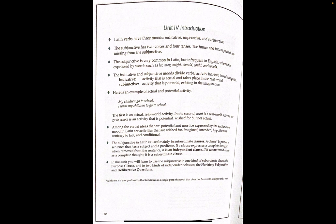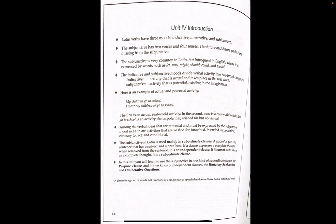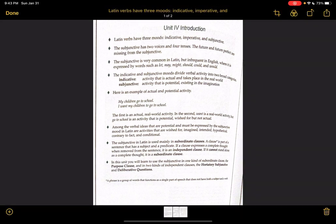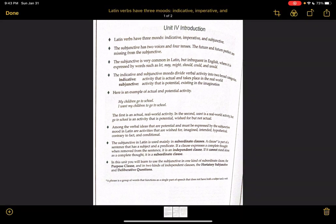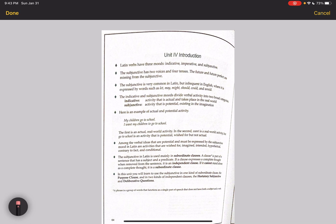So here's the unit four introduction. Latin verbs have three moods: the indicative, imperative, and subjunctive. Remember, indicatives show factual things, things that occur in the real world, actions that occur. Imperatives are orders, as you know. And subjunctives, this is what's new to us this week, subjunctives.